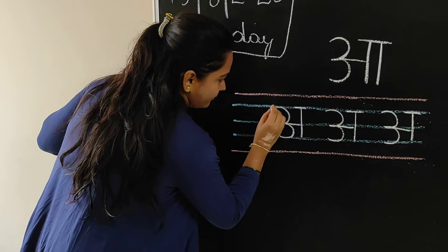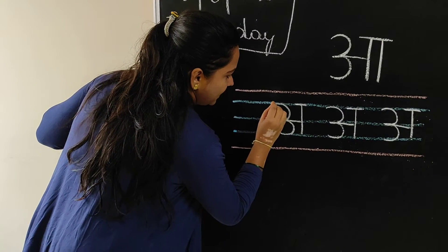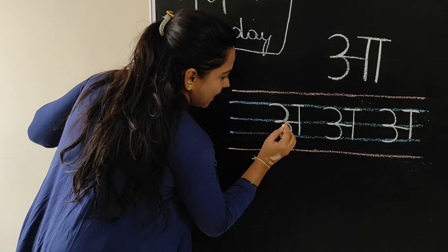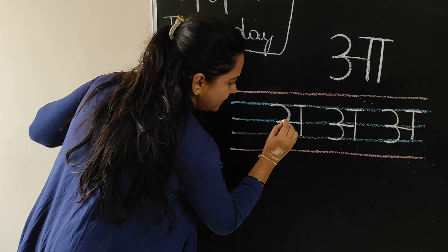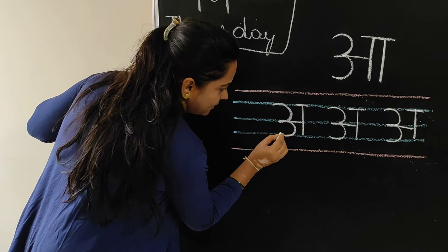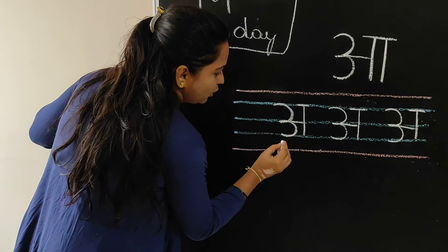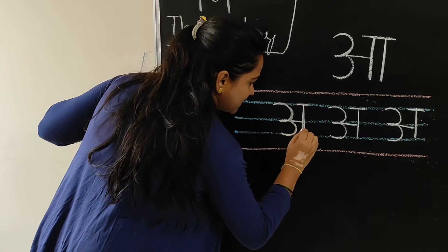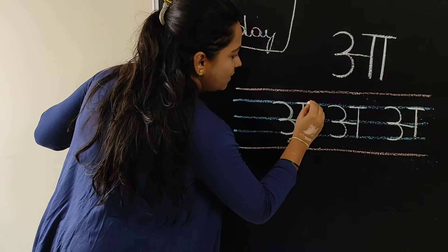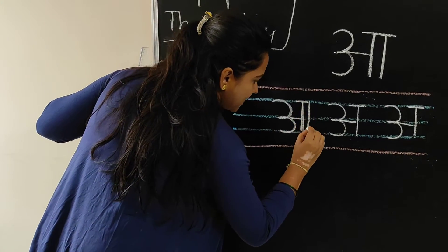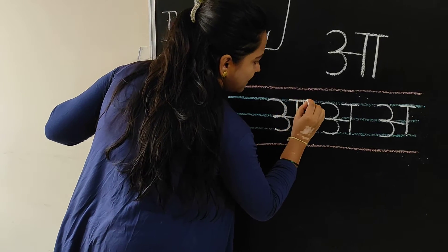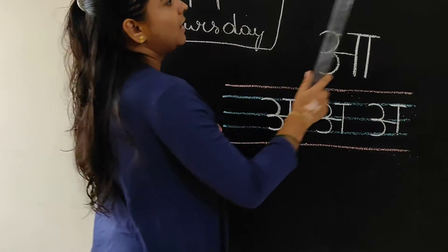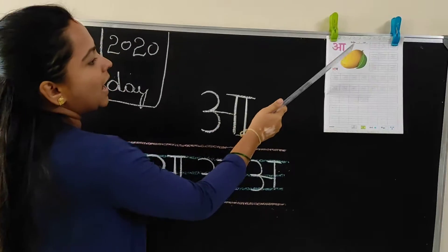Start from first blue line, ends with second blue line and second blue line to third blue line. One standing line, one more standing line, one sleeping line. A.